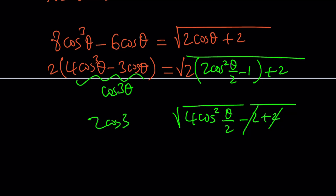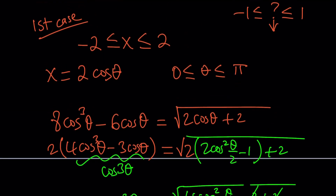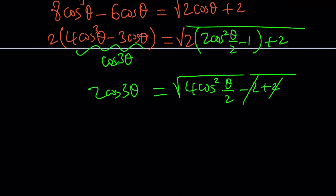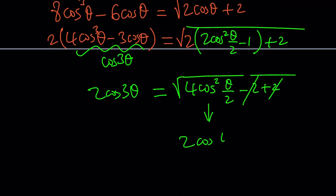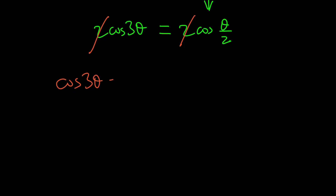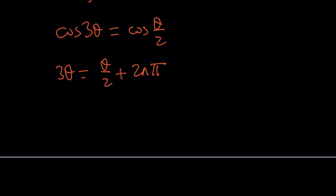We have 2 cosine(3theta) equals 2 cosine(theta over 2). The two 2s cancel out, and we end up with cosine(3theta) equals cosine(theta over 2). This is a very basic trigonometric equation. Solving it: 3theta equals theta over 2 plus 2n pi. Putting everything on the same side gives 5theta over 2 equals 2n pi, so theta equals 4n pi over 5. For n equals 0, theta equals 0; for n equals 1, theta equals 4pi over 5.